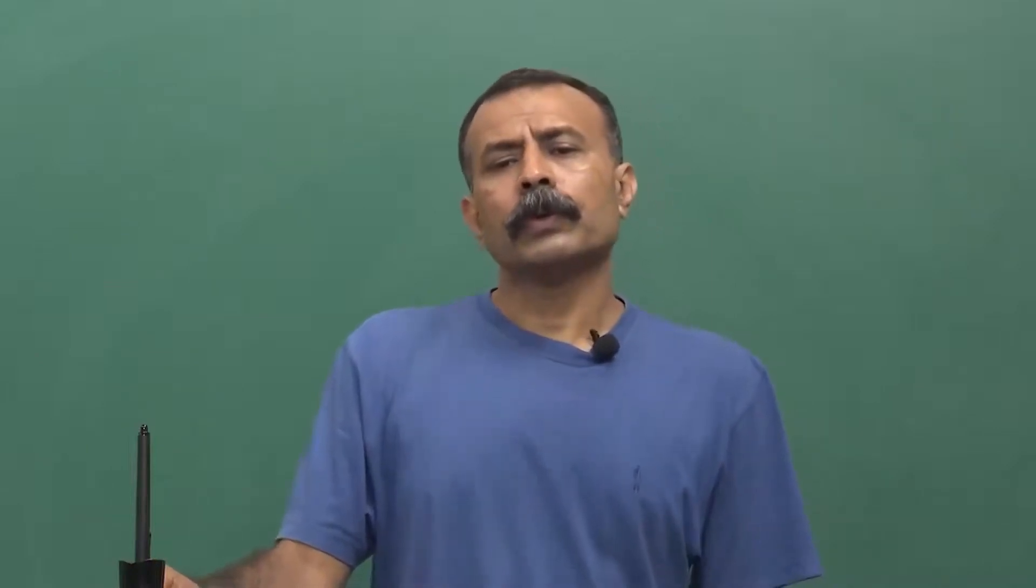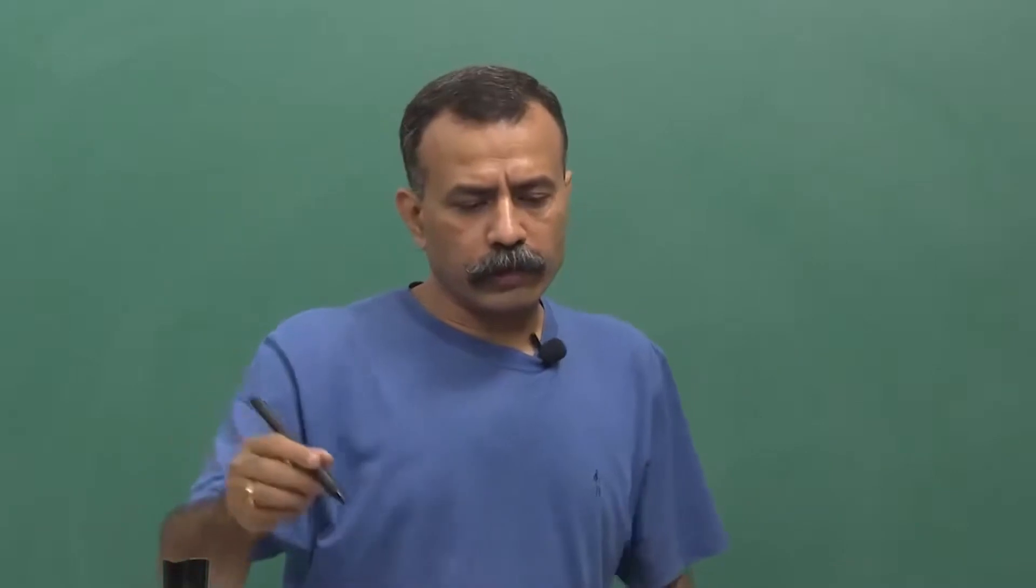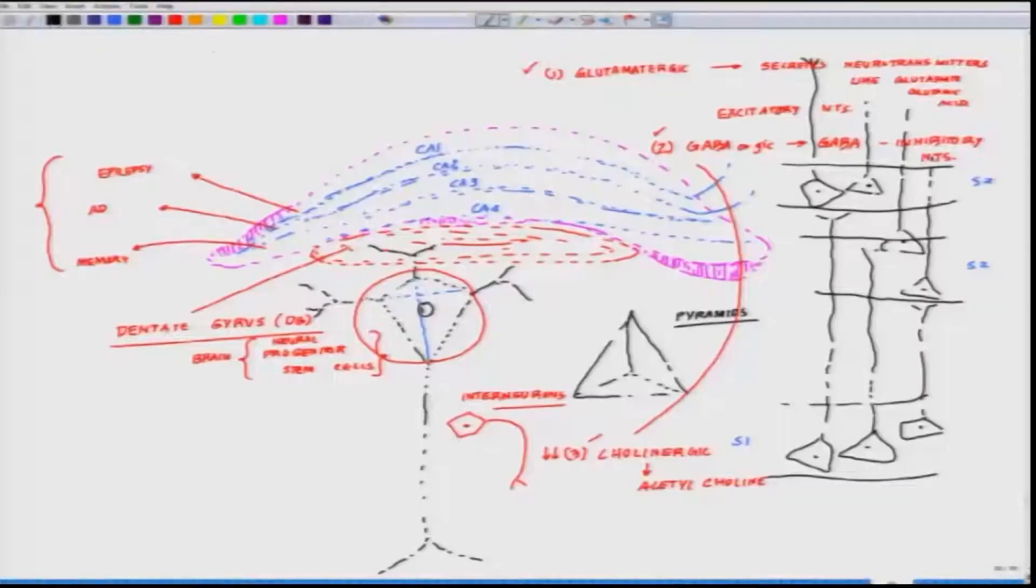So now, what happens in epilepsy in this circuit? We have briefly dealt with this circuit - how they are connected, CA1 CA3 region. This is week 6 and this is lecture 3, W6L3. What happens is that at certain small locus, this is very difficult to pinpoint, there is hyperexcitability.